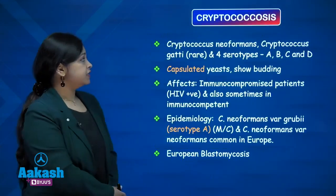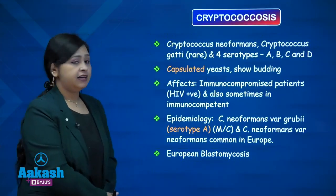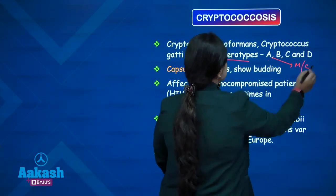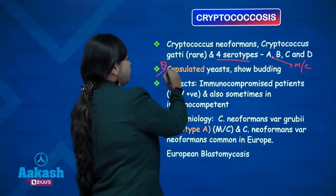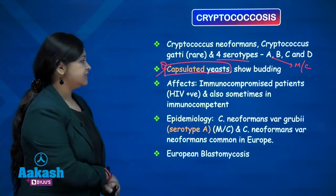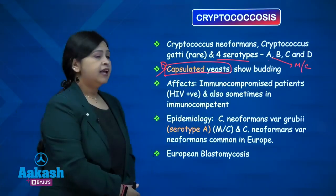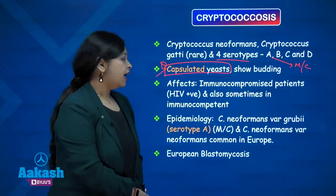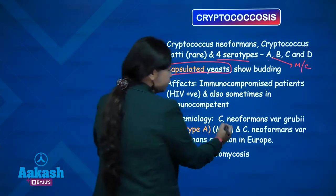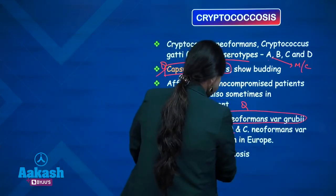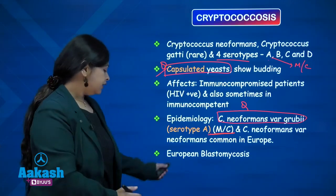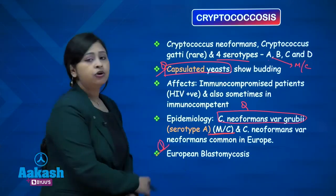Coming to the next opportunistic infection — cryptococcosis. Cryptococcus neoformans and Cryptococcus gattii are the causative agents. Neoformans is the most common and there are four serotypes A, B, C, and D — serotype A is the most common. These are capsulated yeasts, which is an important diagnostic point. They affect immunocompromised patients particularly HIV positive patients. Epidemiologically, Cryptococcus neoformans var. grubii is the most common type worldwide, while in Europe it is Cryptococcus neoformans var. neoformans. Importantly, cryptococcosis is also known as European blastomycosis.